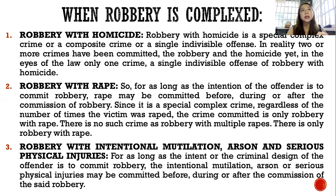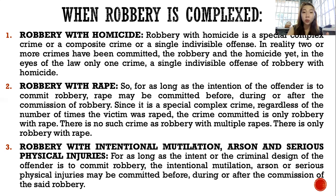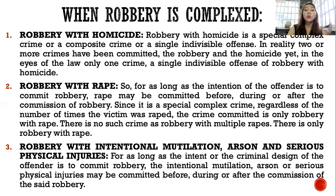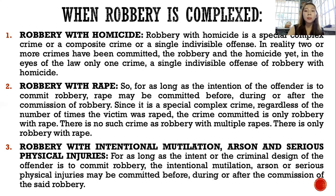This is differentiated from Article 267 — serious illegal detention with homicide — discussed in another video. There, in serious illegal detention with homicide, it is necessary that the victim themselves must die. But here in robbery with homicide, it is not necessary that the victim dies, as long as someone dies incidentally to and connected with the robbery. Even if the offender is the one who dies, it is still the complex crime of robbery with homicide.